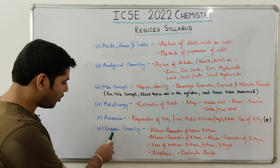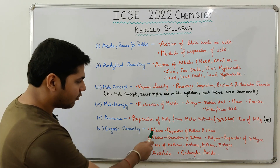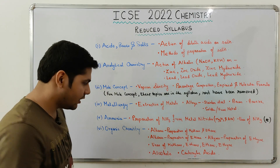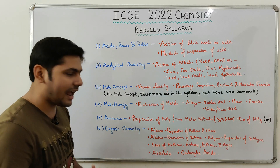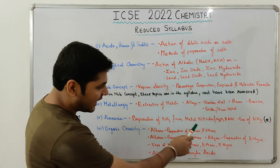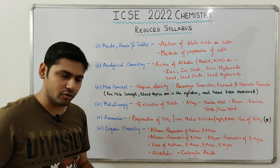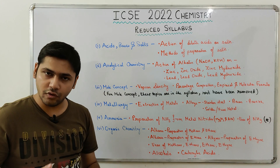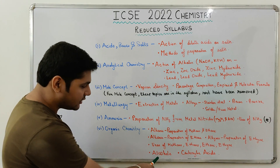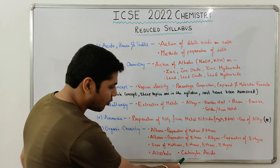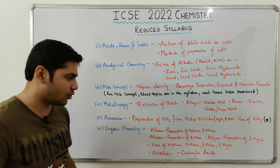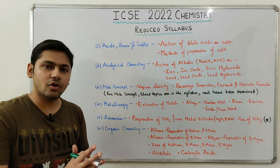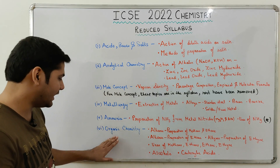Next, from the last chapter Organic Chemistry: from Alkanes, Preparation of Methane and Ethane has been removed. From Alkenes, Preparation of Ethene has been removed. From Alkynes, Preparation of Ethine has been removed. Uses of Methane, Ethane, Ethene and Ethine have been removed. Alcohols have been removed completely and Carboxylic Acids have been removed completely. So there is a good amount of reduction in the section of Organic Chemistry.